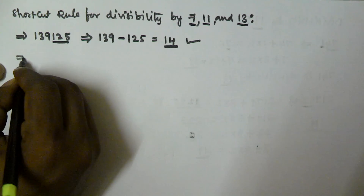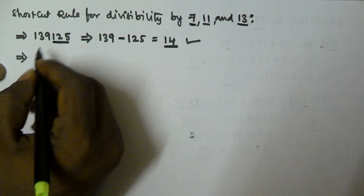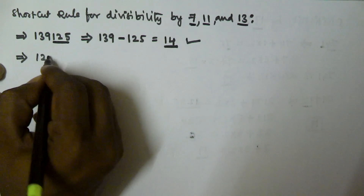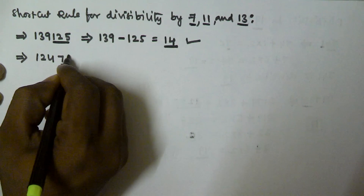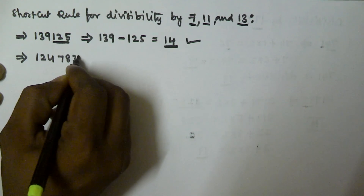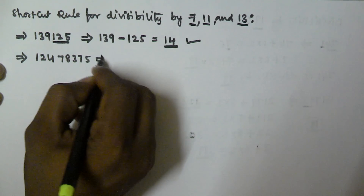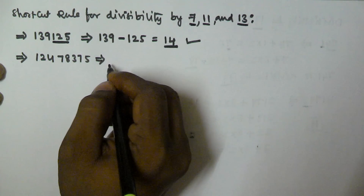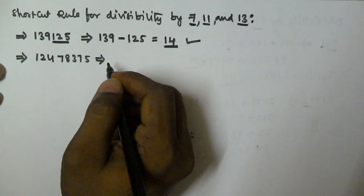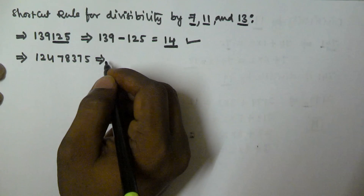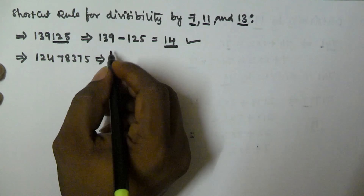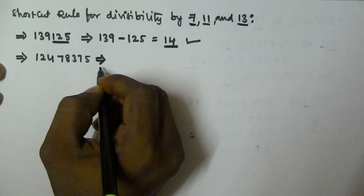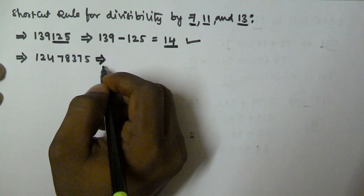Let's consider another example: is 12478375 divisible by 13 or not? We will check if this number is divisible by 13.